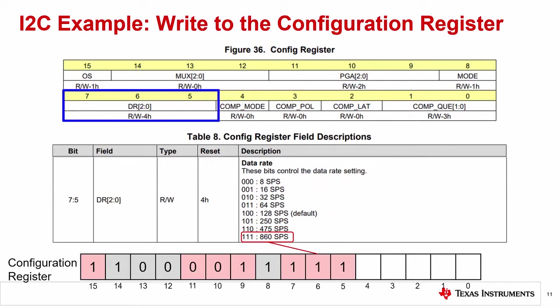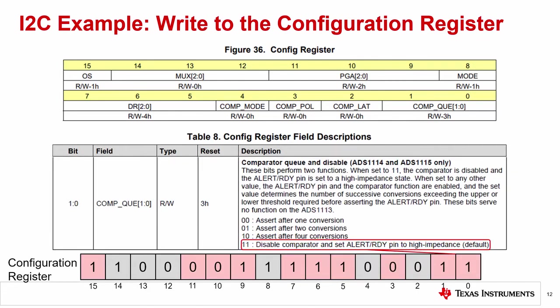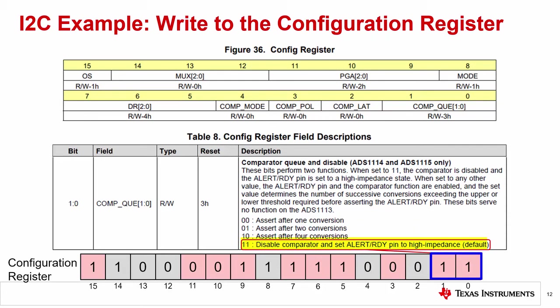Bits 7 to 5 set the data rate for the ADC of the device. We can set this to the highest data rate of 860 samples per second. Set bits 7 to 5 to 111. The last 5 bits from 4 down to 0 are all used for the digital comparator for this device. We won't use the digital comparator here, so we'll disable this setting with the last two bits of the register and set the remaining bits to their default setting. Set bits 4 to 0 to be 00011.